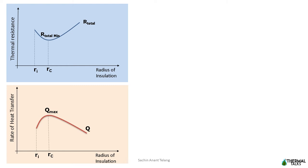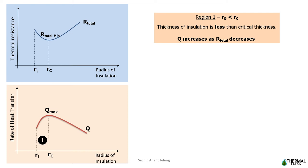The heat transfer from the pipe may increase or decrease depending on which resistance effect dominates. Heat transfer is maximum when total thermal resistance is minimum at the critical radius. Let us closely examine Region 1, where thickness of insulation is less than critical thickness — that is, if the value of Ro is less than Rc. As addition of insulation increases from Ri, the heat flow increases until the insulation radius reaches the critical value, where total thermal resistance is minimum.